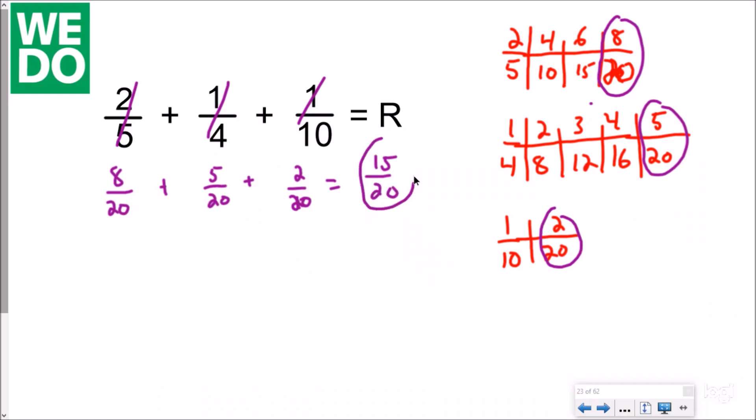And so when I add these together I get an answer of fifteen-twentieths. Which again I know that I can simplify this because both of these end in a five or zero.